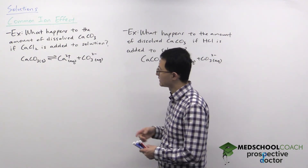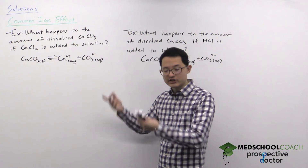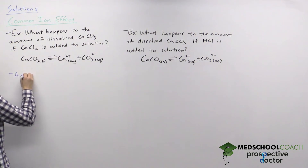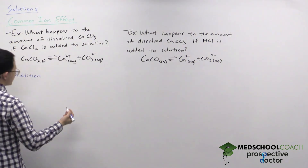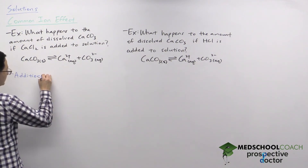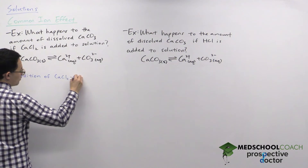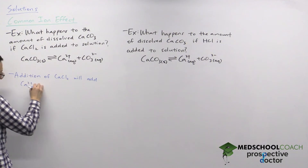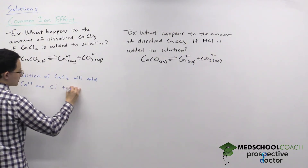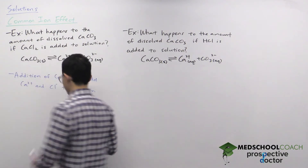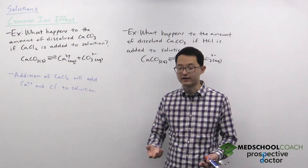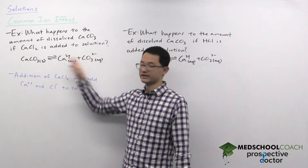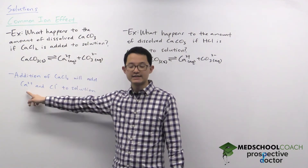The way to think about it is to apply Le Chatelier's principle. Calcium chloride is going to dissolve and dissociate to form calcium ions and chloride ions. So addition of calcium chloride will add calcium ions and chloride ions to solution. The common ion here is not chloride — because calcium carbonate does not have a chloride — but calcium is the common ion.